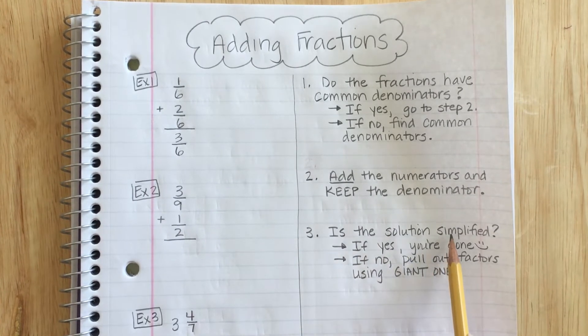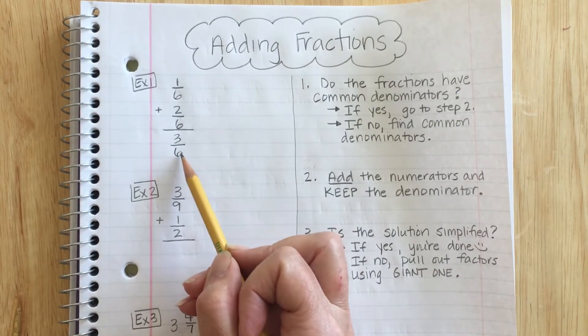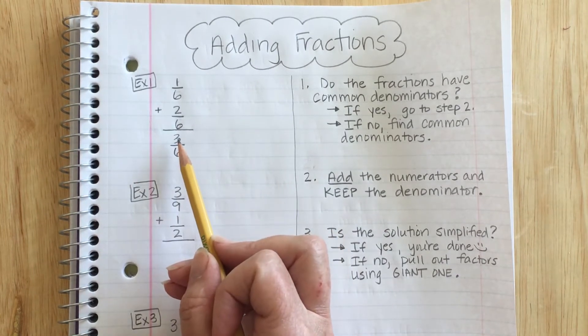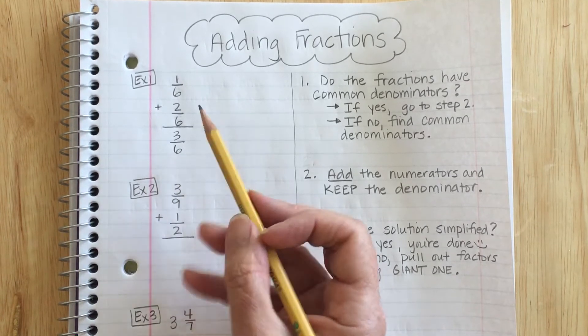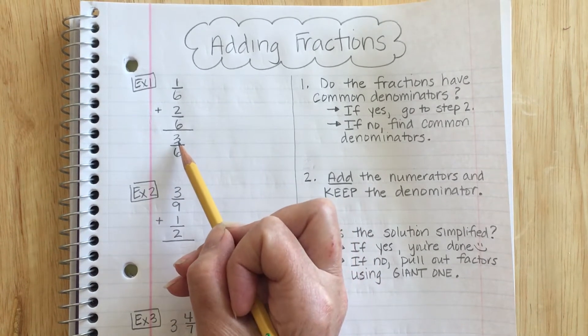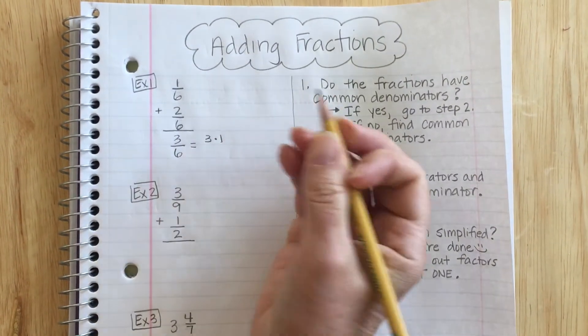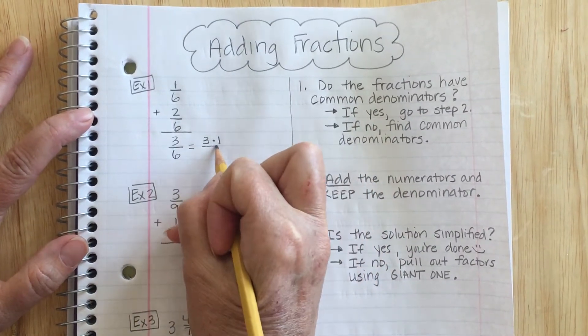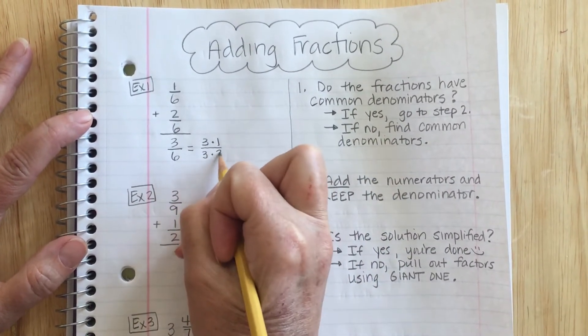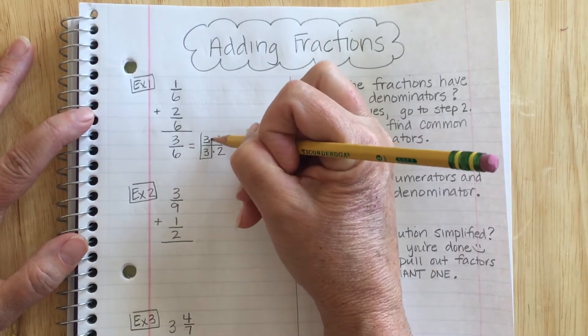Is the solution simplified? So I have to think, is there going to be a number that goes into both 3 and 6? And no, it's not simplified. So I need to pull out my factors. I think about the numbers that go into 3. I know the numbers that go into 3 are 3 times 1. Then I look at what goes into 6. I know that 6 is also 3 times 2. So if I take a look, I've got a giant 1 I can take out.